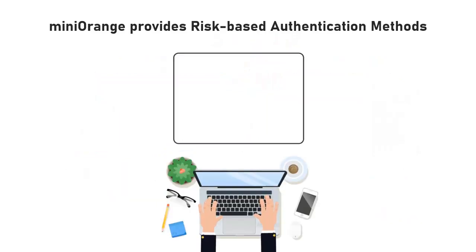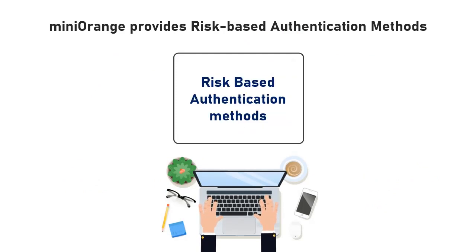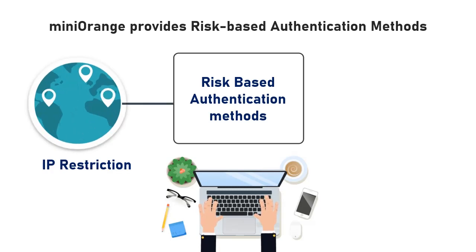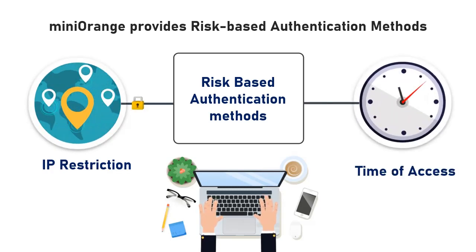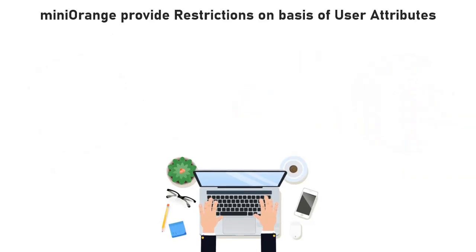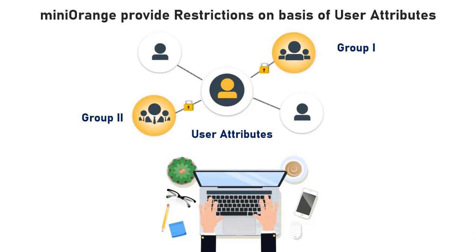In addition to the 15 plus MFA methods, Mini Orange also provides risk-based authentication methods, which are authentication based on IP restriction and authentication based on time of access. Mini Orange can provide restrictions on the basis of user attributes also, like groups and many more.